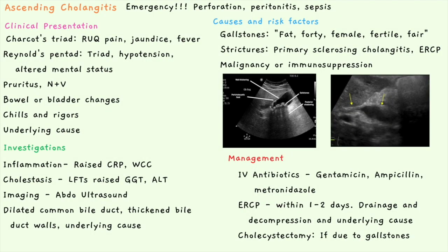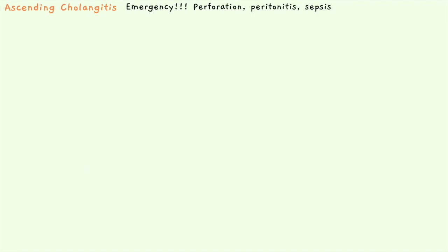This video is on ascending cholangitis. Ascending cholangitis occurs when there's an obstruction in the biliary tree. Whenever there's stasis of fluid, bacteria can pool there and in ascending cholangitis the bacteria then moves upwards. This is a medical emergency because there's a risk of perforation, peritonitis and sepsis.